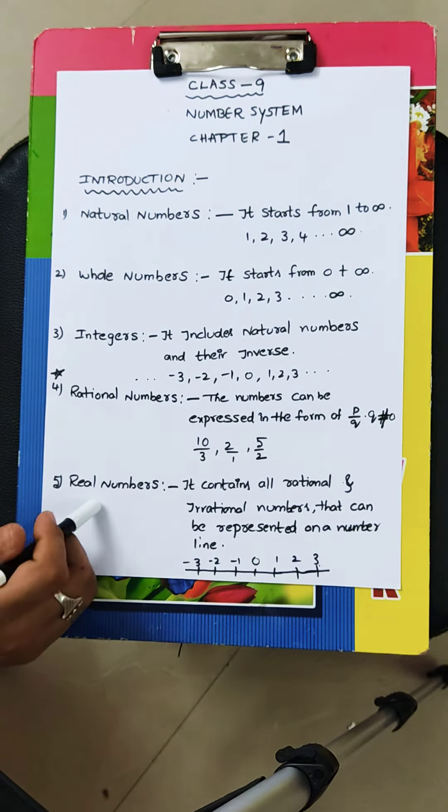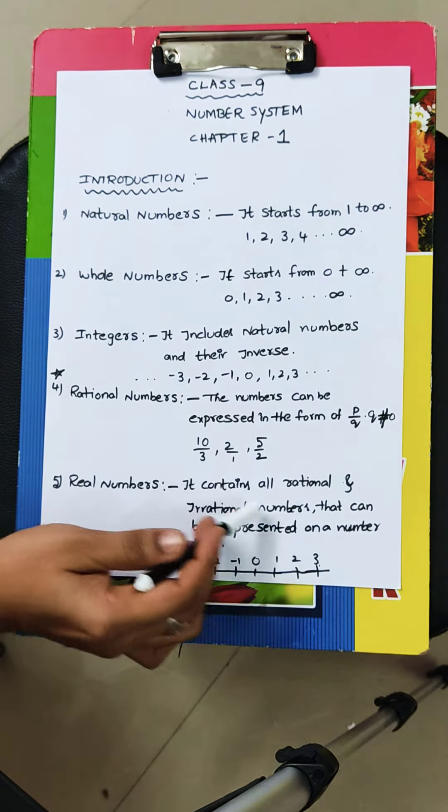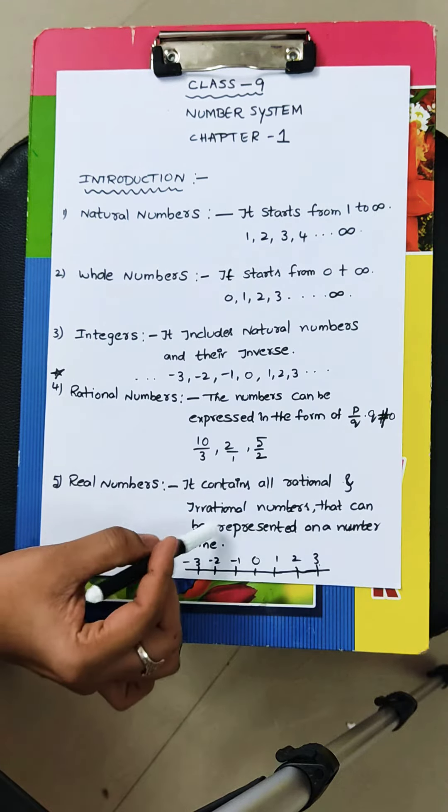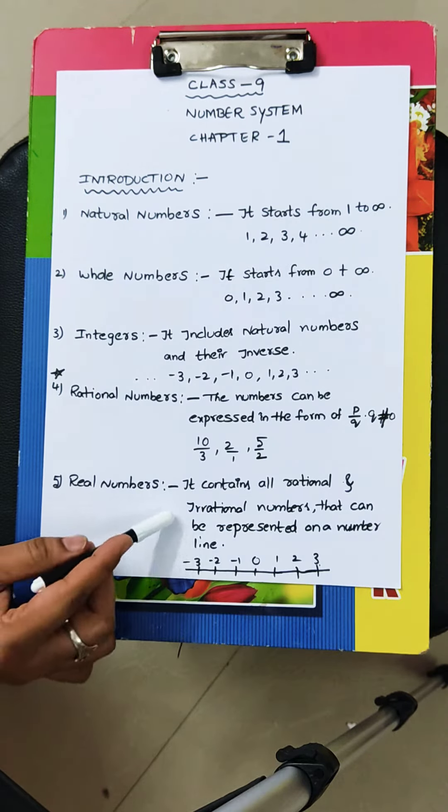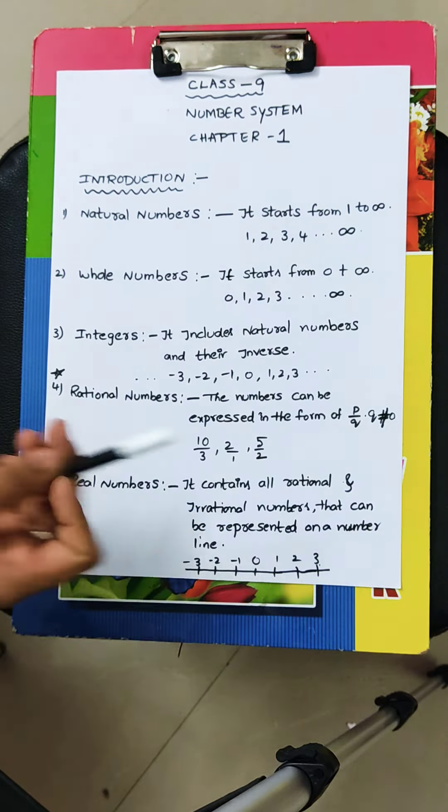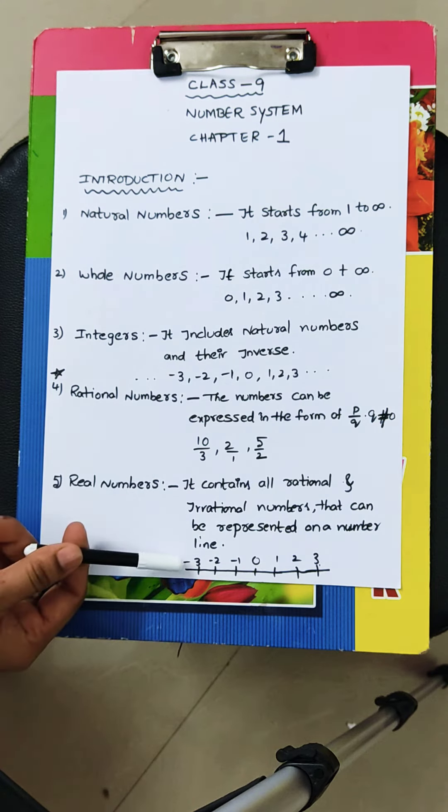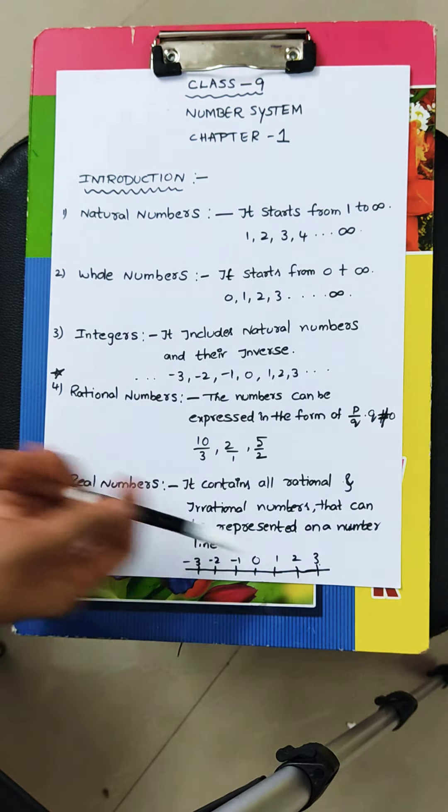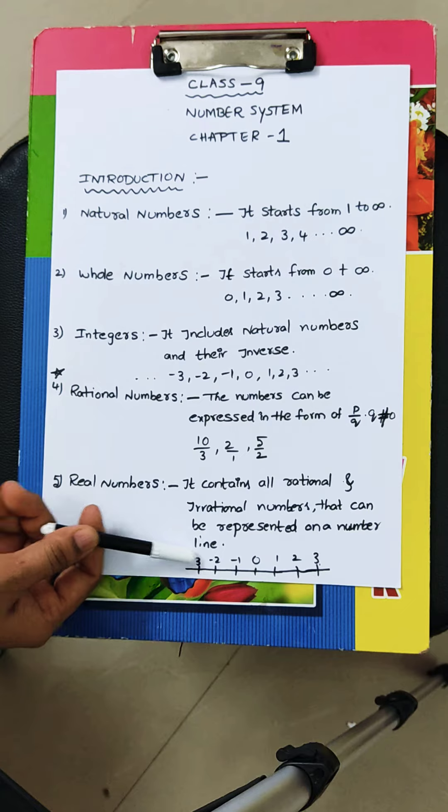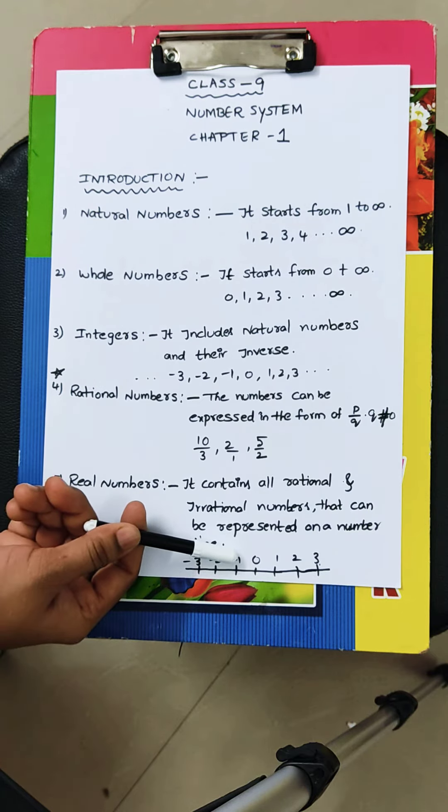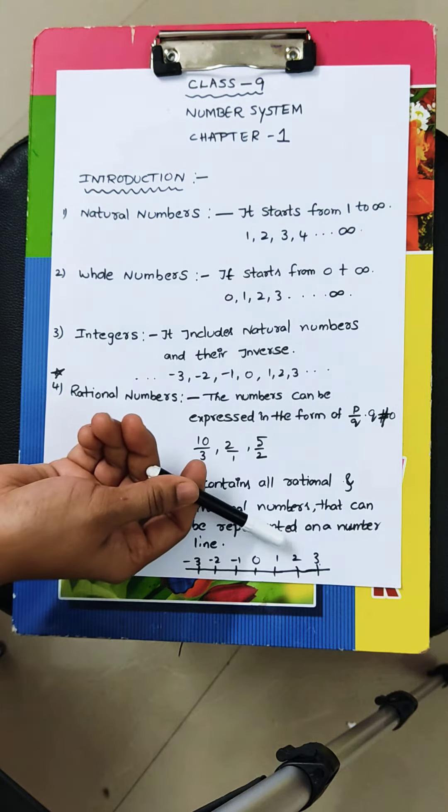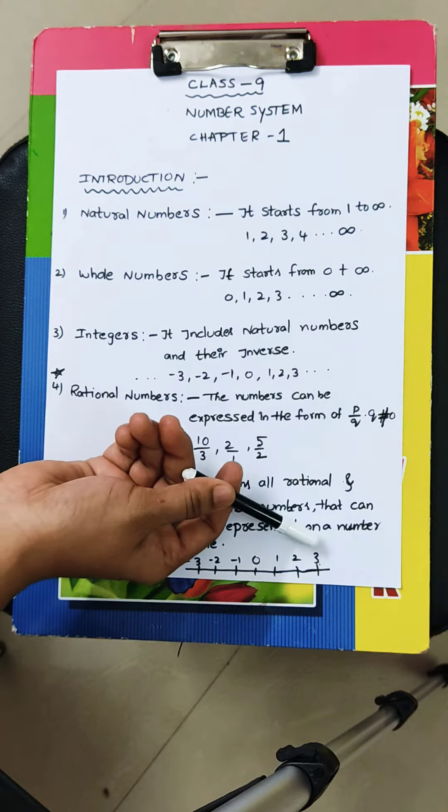Next, fifth one, real numbers. It contains all rational and irrational numbers that can be expressed on a number line. I mean minus 3, this is the line, on line. Minus 3, minus 2, minus 1, 0, 1, 2, 3.